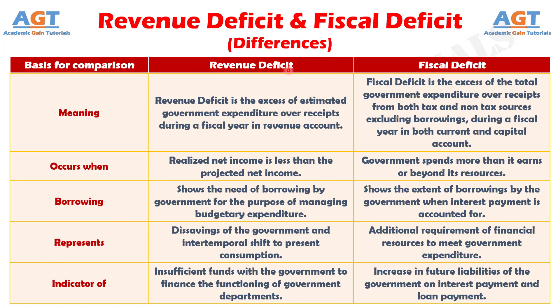Revenue deficit indicates a shortage that has to be made up from capital receipts or borrowings. To be precise, it is a repayment burden in the future which does not match with any investment. So these are the differences between revenue deficit and fiscal deficit.